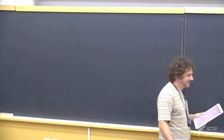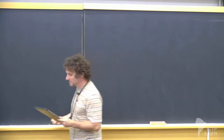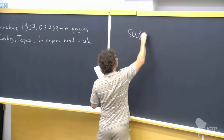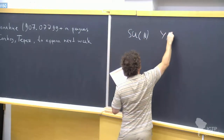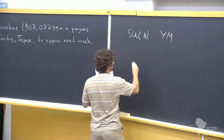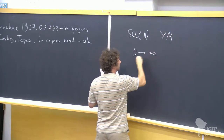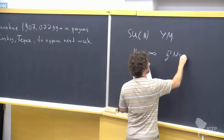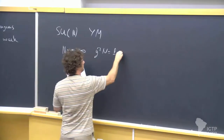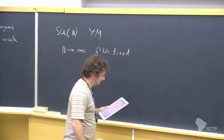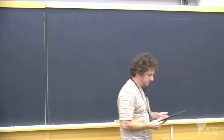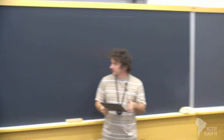The underlying question is that we want to understand SU(N) Yang-Mills in the large N limit, n to infinity, with x squared times n fixed. It's a famously old and famously hard question.